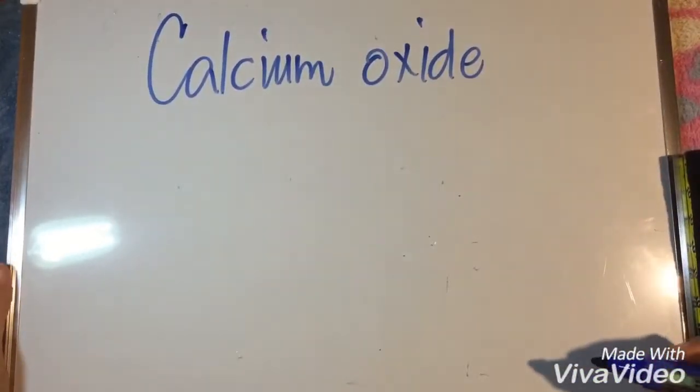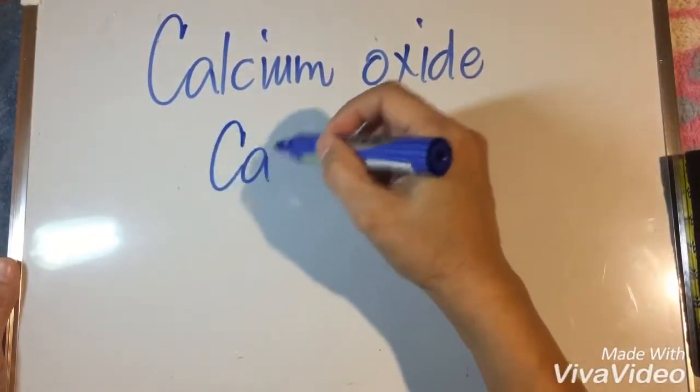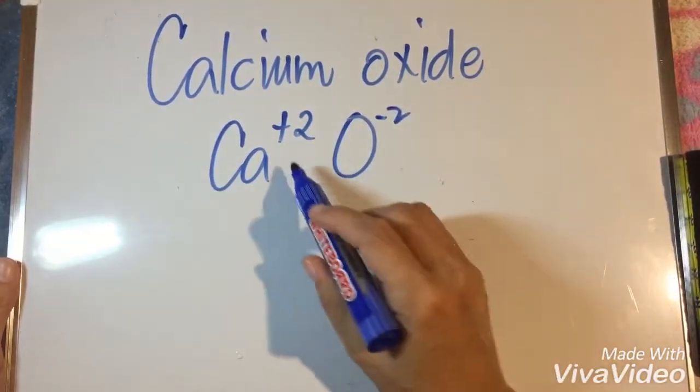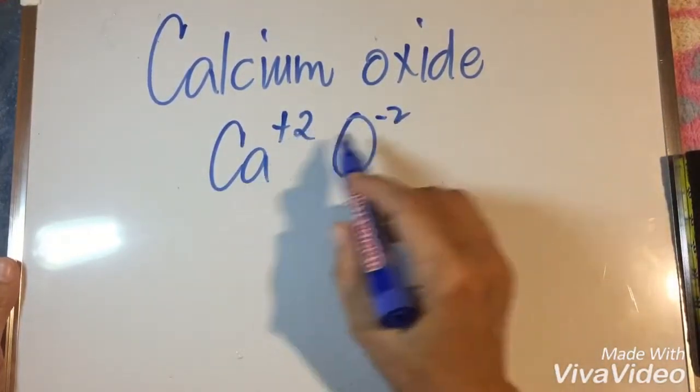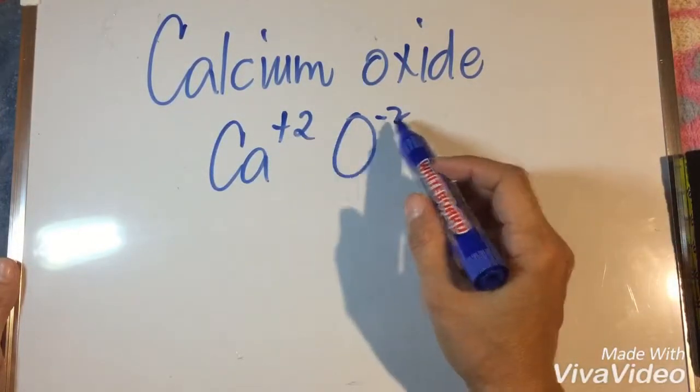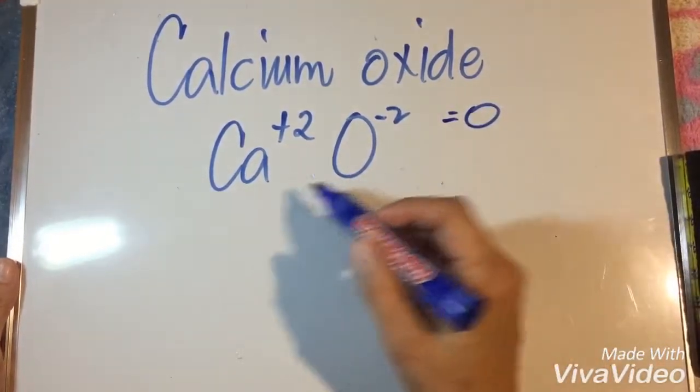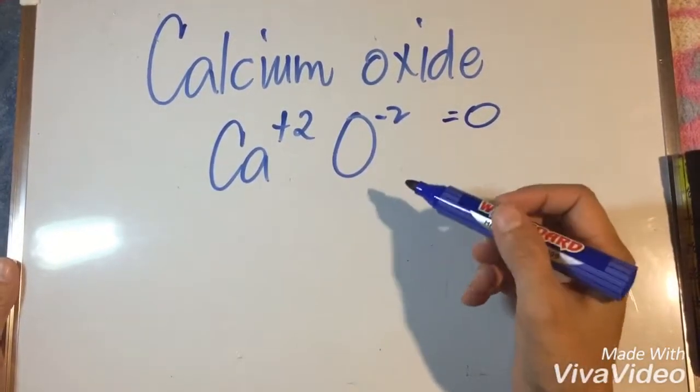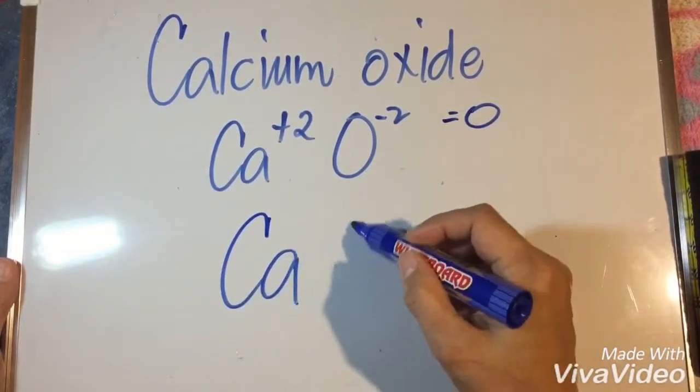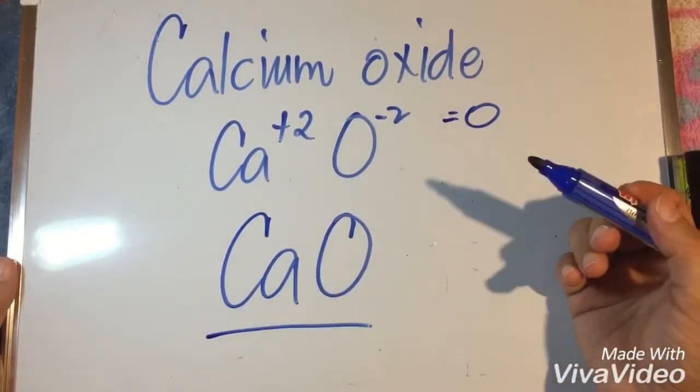Another example is calcium oxide. This time, calcium oxide is composed of calcium ion and oxygen ion. As you can see, we already have equal charges, positive two and negative two, meaning the net charge is already zero. Therefore, we do not need any subscript for this kind of chemical formula, so we just write CaO for the chemical formula of calcium oxide.